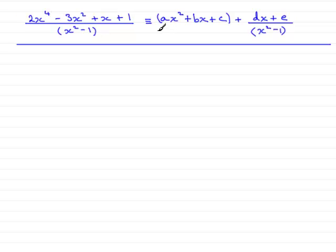We've got to show that it's identical to ax squared plus bx plus c plus dx plus e all divided by x squared minus 1 and state the values of a, b, c, d and e.